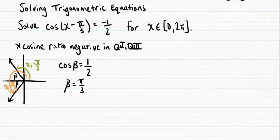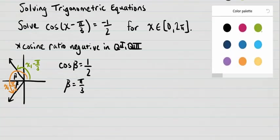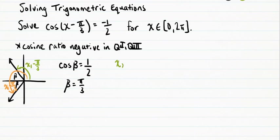From our diagram, putting beta back in gives us that x1 minus pi over 3, our first angle, is going to be equal to pi minus beta, so pi minus pi over 3.